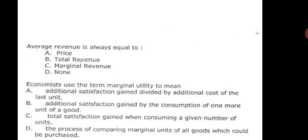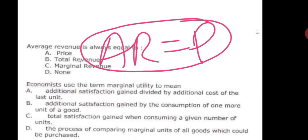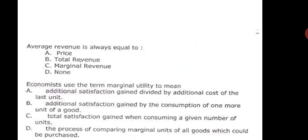The next question is: average revenue is always equal to — price, total revenue, marginal revenue, or none of these. Average revenue means price per unit sold, which is always equal to price. So the correct option is A — average revenue equals price.